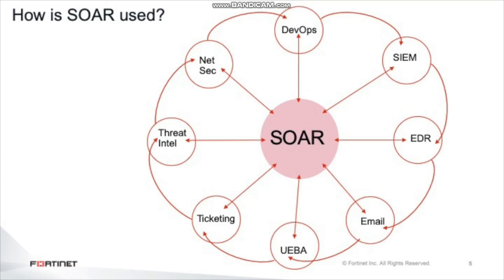For example, to block traffic from a malicious IP address in your firewall or delete a phishing email from your email server. By building your standard processes into playbooks, you can start to replace the repetitive, time-consuming parts of the processes with automation that accomplishes the same task at machine speed. By optimizing your process this way, your analysts have more time for in-depth manual investigations.